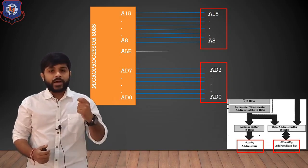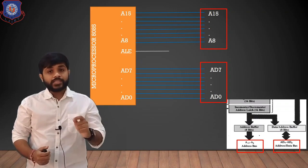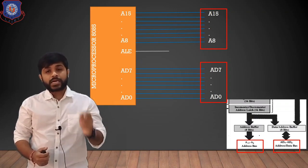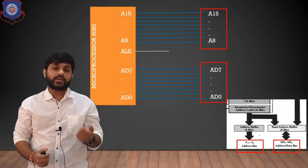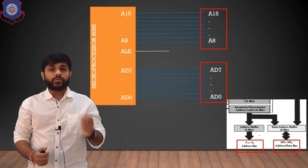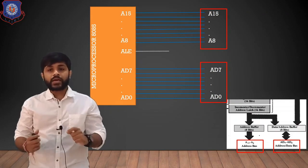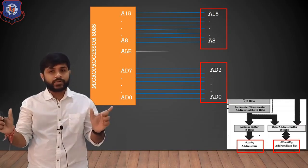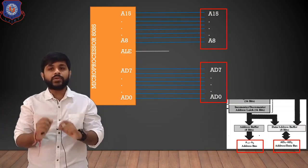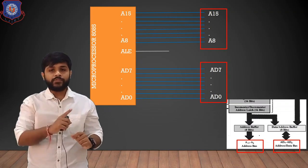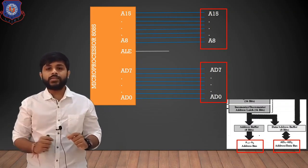So if I want to use the address bus, this AD0 to AD7 should be converted into A0 to A7. When it is converted to A0 to A7, we will combine this A0 to A7 with A8 to A15, and together it will become A0 to A15, a 16-bit address bus.